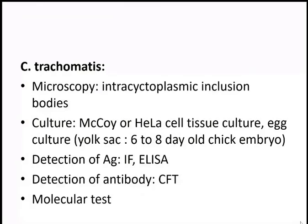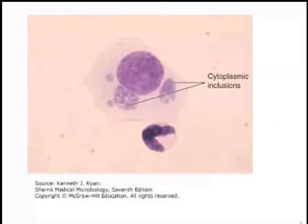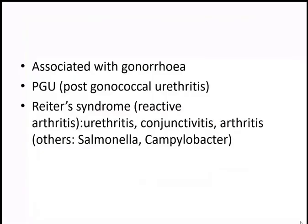Using Giemsa stain, intracytoplasmic inclusion bodies can be visualized. Other diagnostic methods include culture on McCoy or HeLa cells or egg culture, antigen detection by immunofluorescence or ELISA, antibody detection, and molecular tests. The two smaller structures are the intracytoplasmic inclusion bodies and the larger one is the nucleus; sometimes the inclusion bodies can be larger and the nucleus appears smaller.